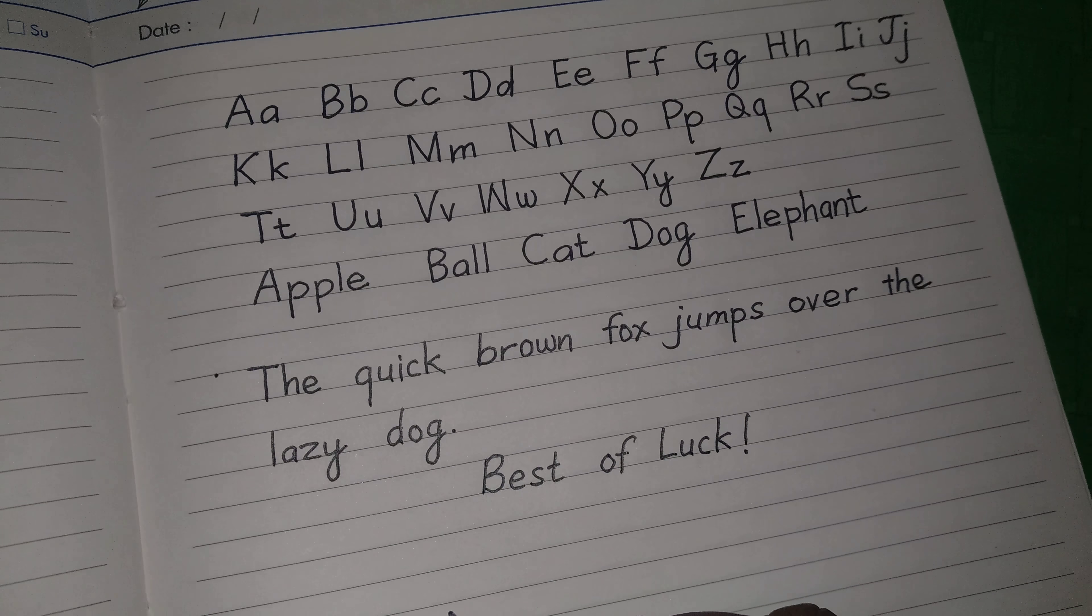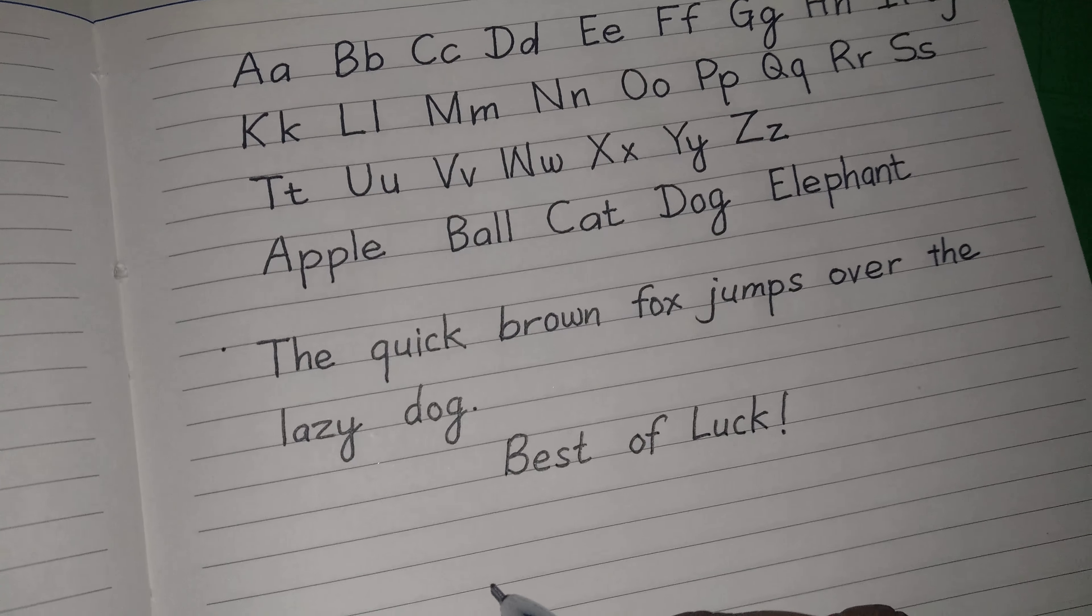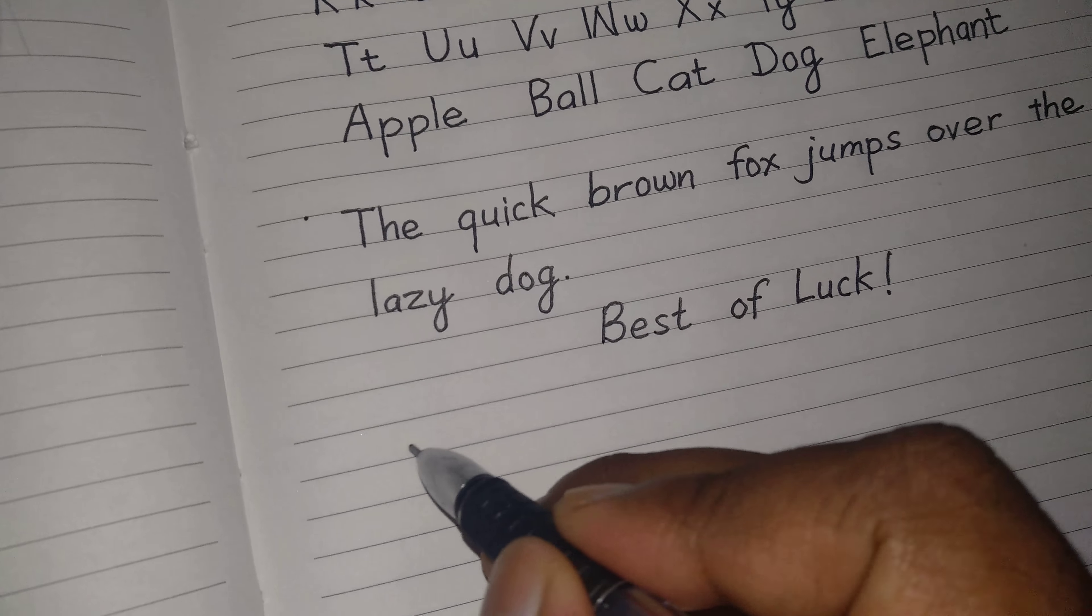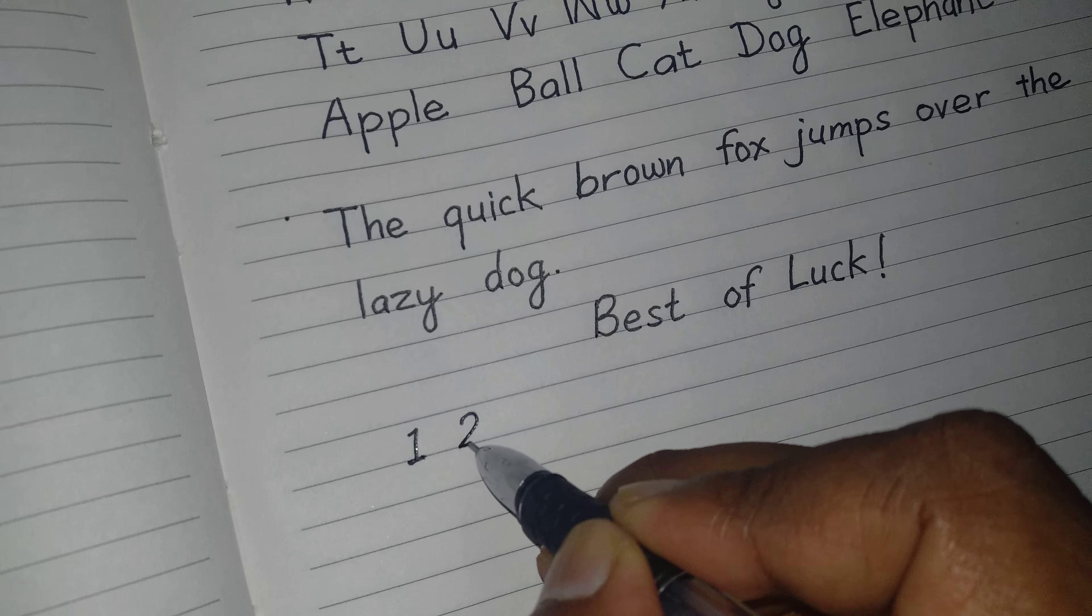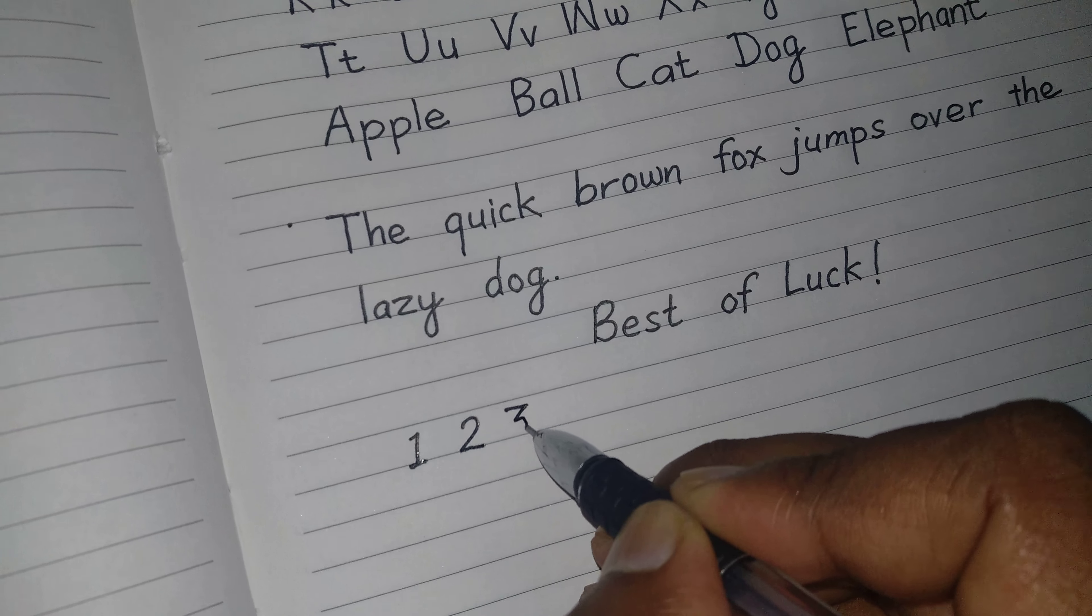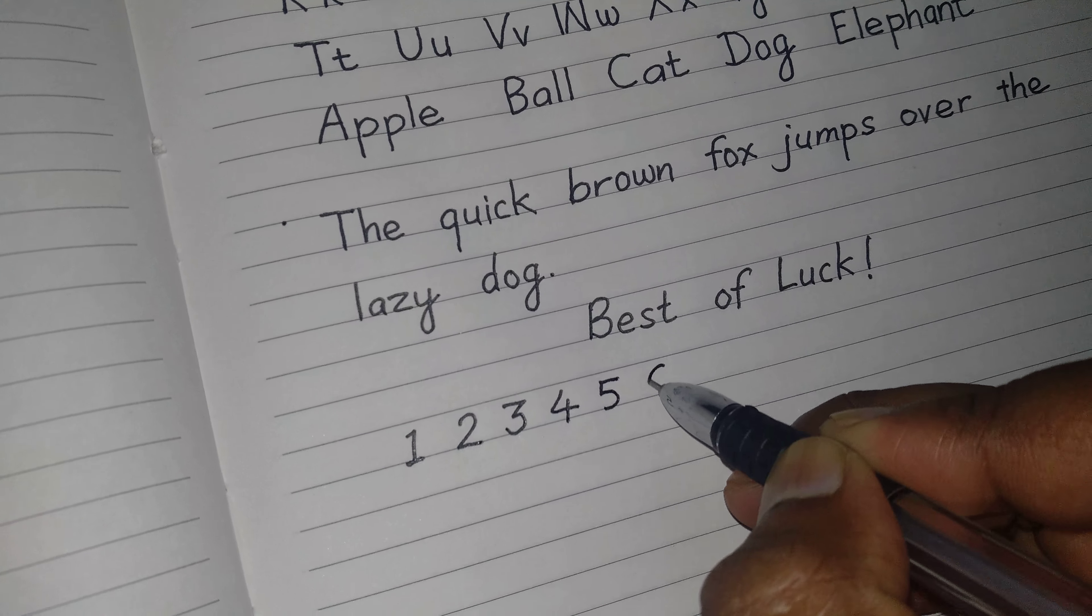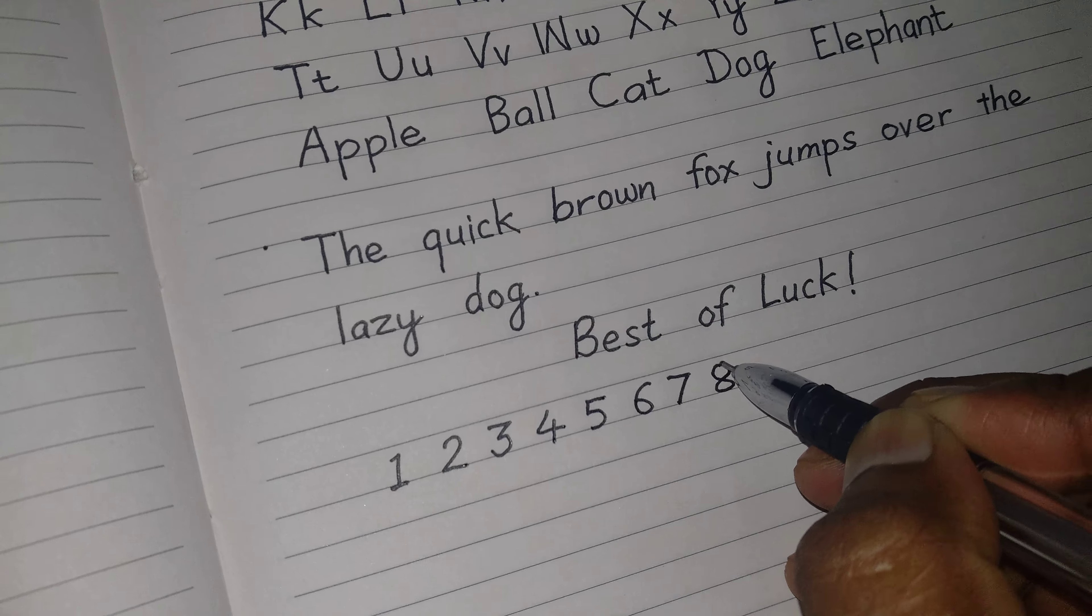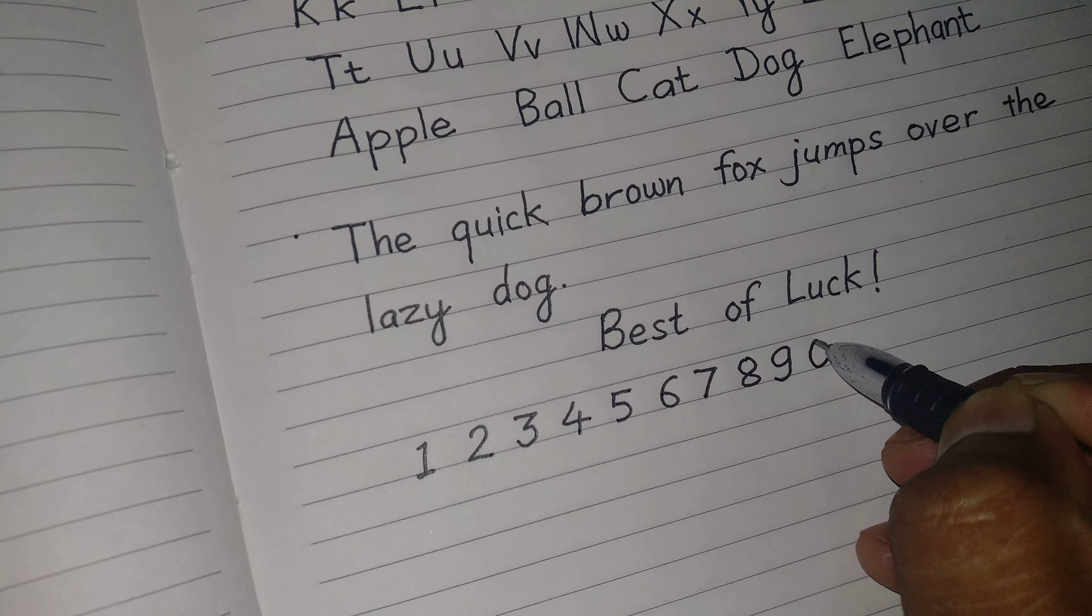If you do like this, your handwriting will improve a lot. And you can add numbers, how to write numbers: one, two, three, four, five, six, seven, eight, nine, and zero.